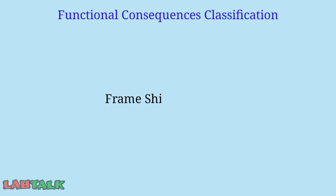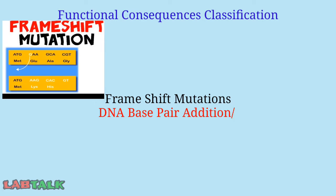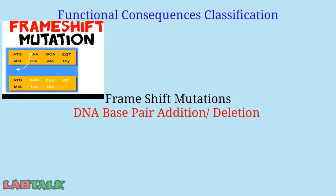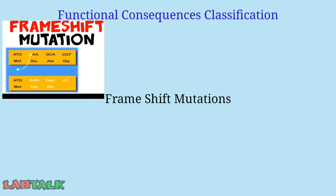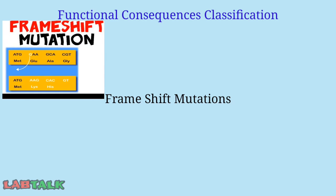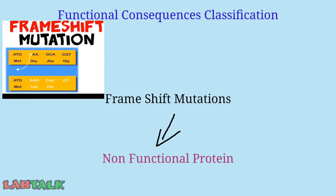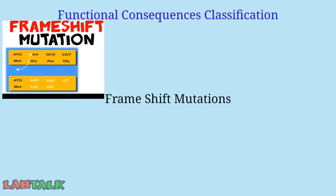The next type is a frameshift mutation. This occurs when the addition or deletion of DNA bases affects the reading frame of the gene. The reading frame consists of groups of three bases called codons, each coding for an amino acid. A frameshift mutation switches the grouping of these bases and changes the amino acid code, resulting in a typically non-functional protein. Frameshift mutations can be insertions, deletions, or duplications.